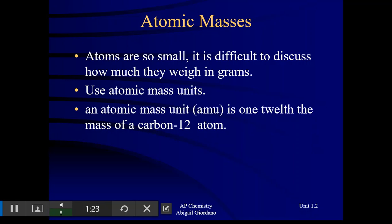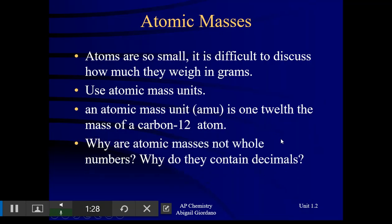But what we're really going to focus on today is when you look at these numbers off the periodic table, why are they not whole numbers? Why does every element's atomic mass have all these decimals? And where does that number come from? The answer is mass spectroscopy data.